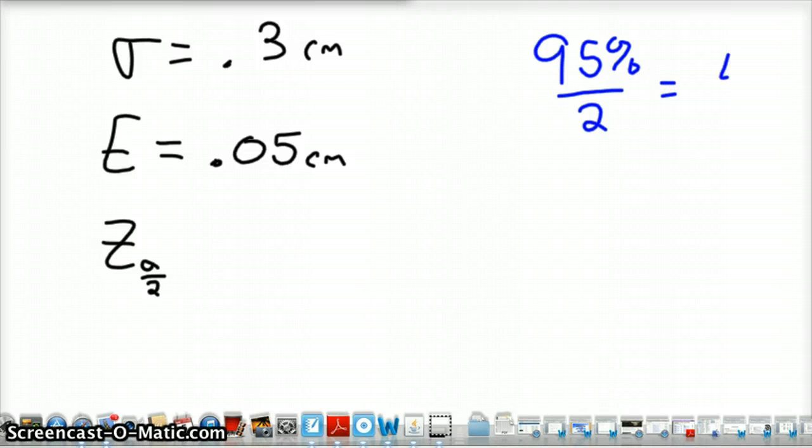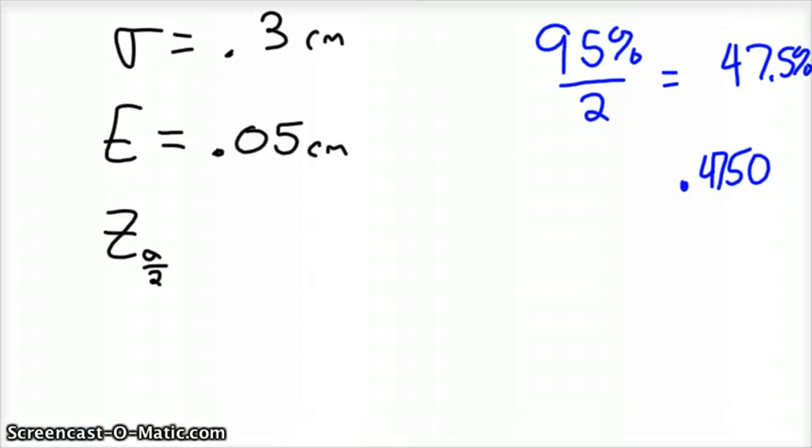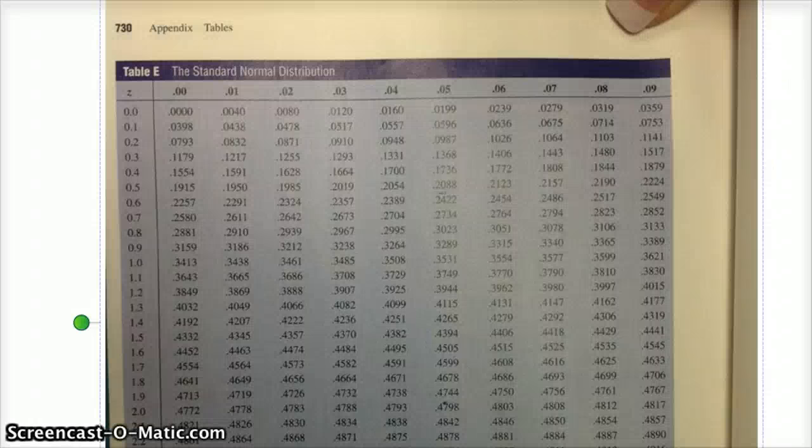So when you divide that out, you end up with 0.475 for the z-score is what we're looking for. And so you pull up any standard normal distribution score, and you look for the 0.475 in the table.